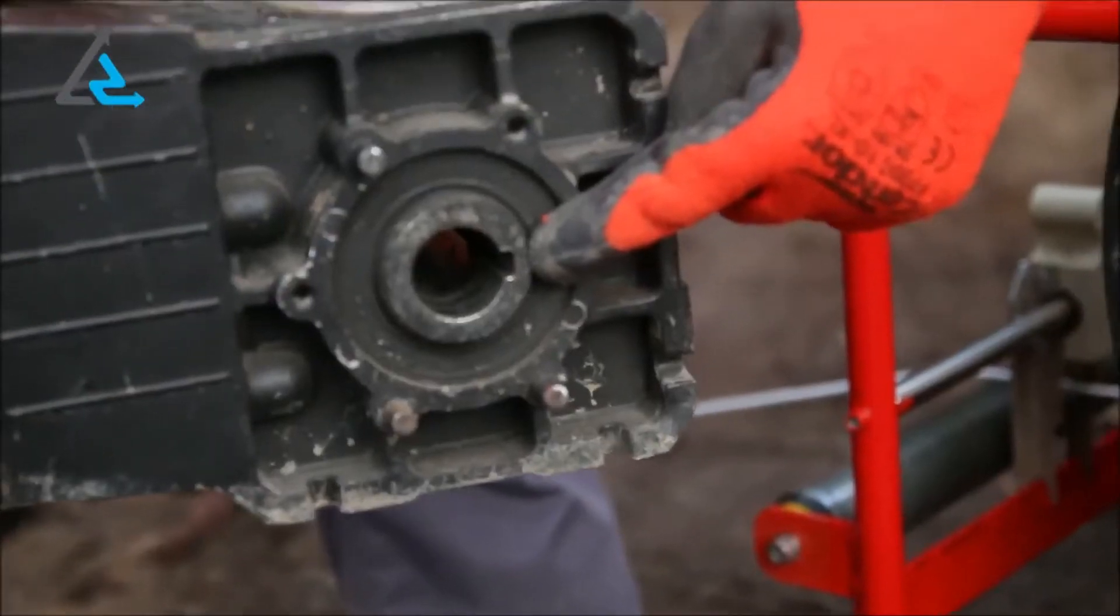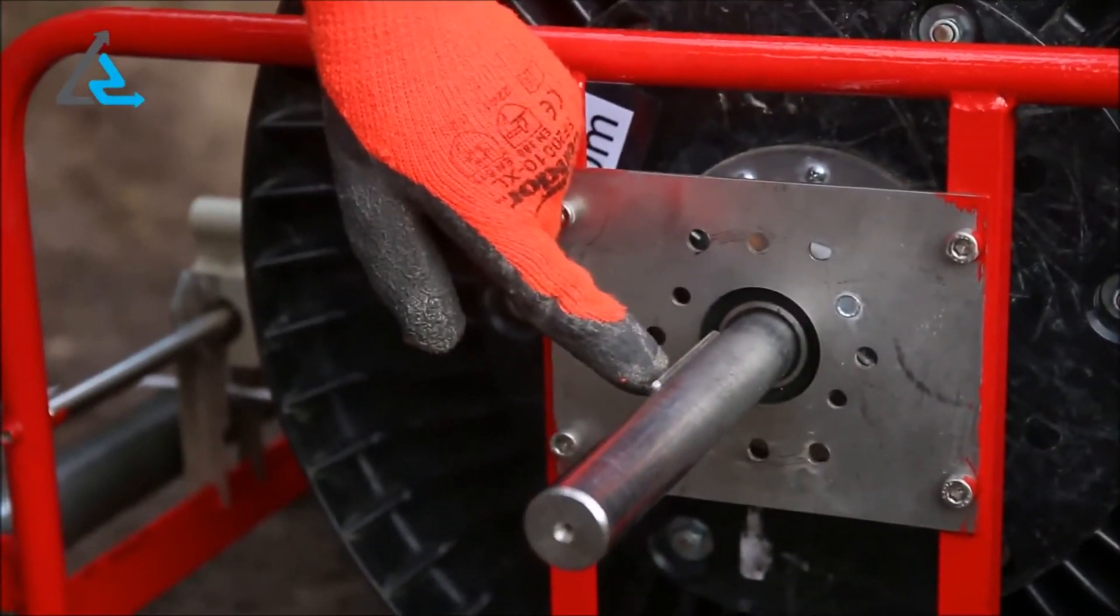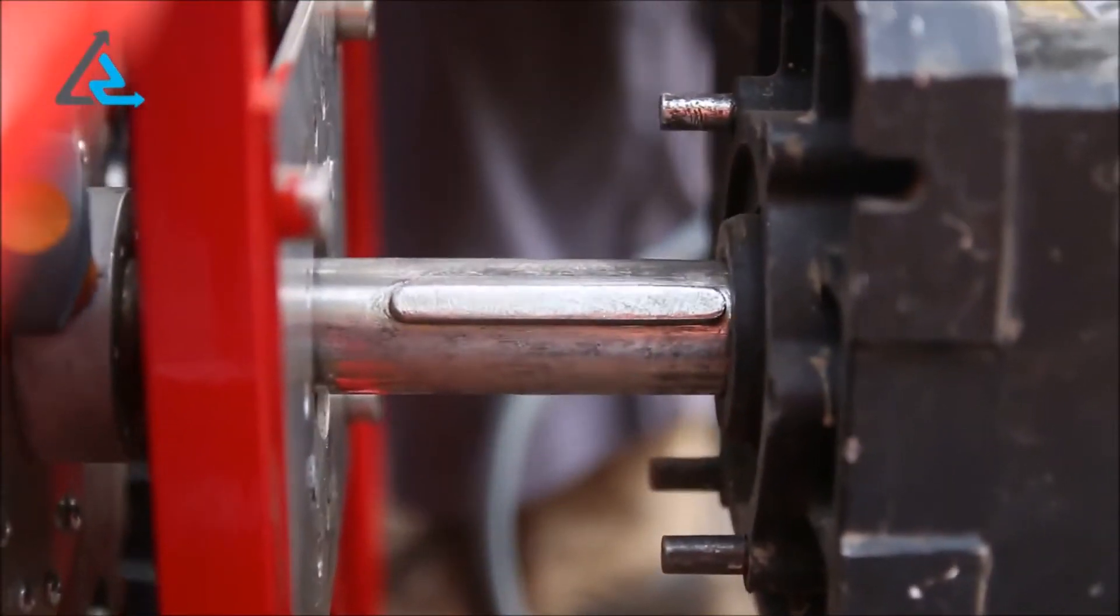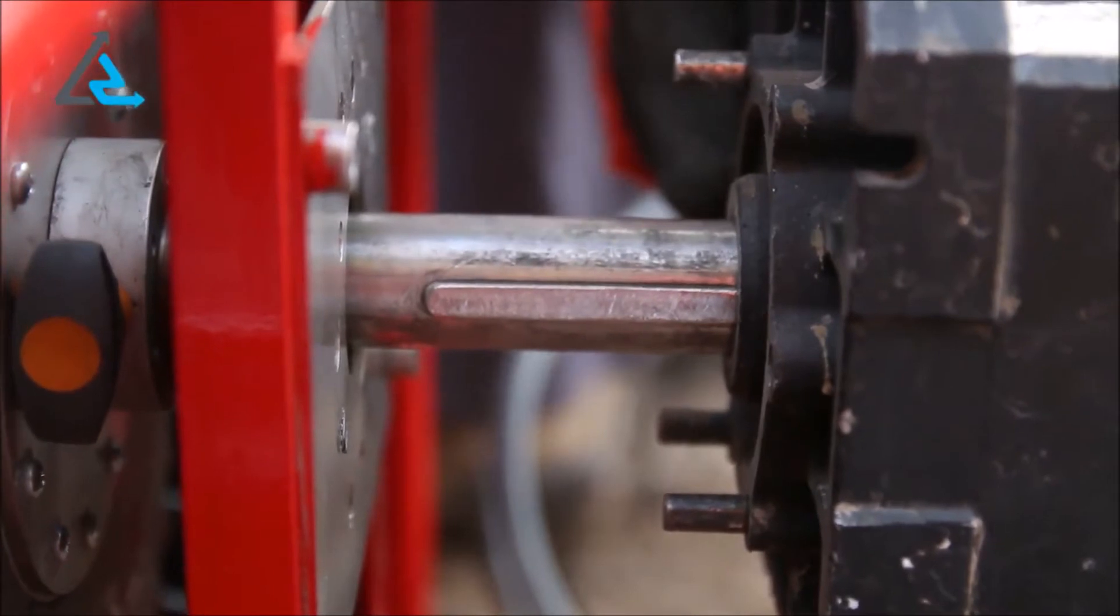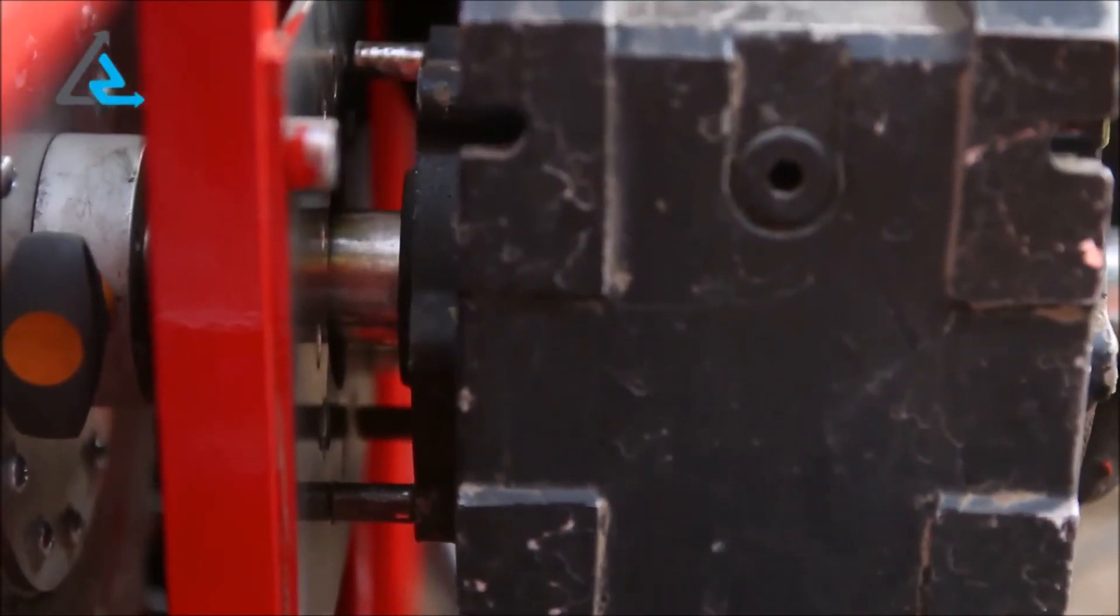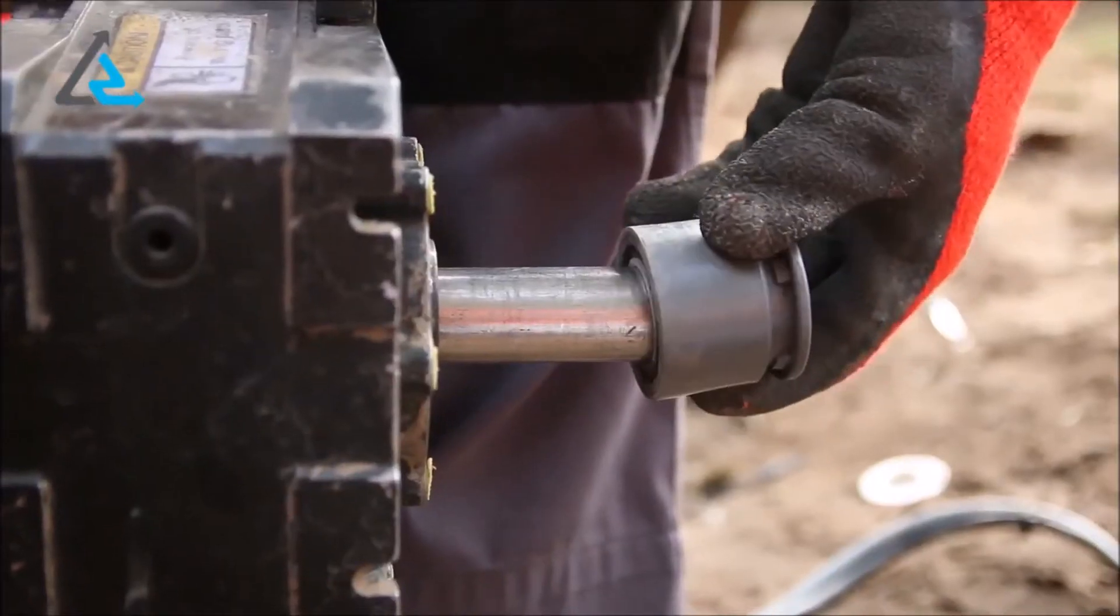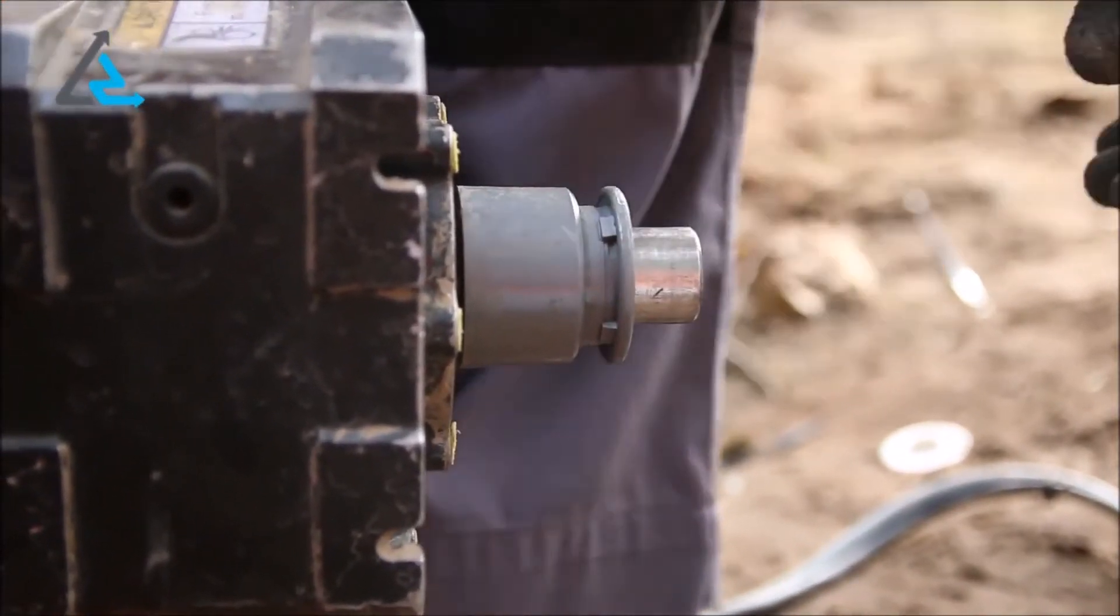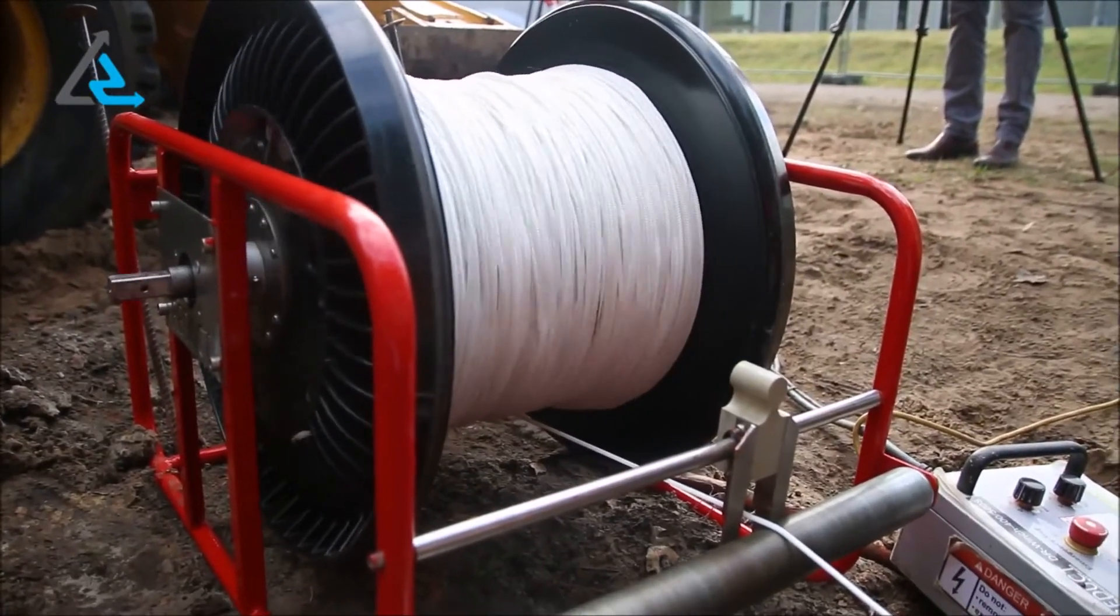To mount the motor, make sure the woodruff key on the axis is aligned with the slot in the motor. When the motor is fully mounted, place the lock nut securely. The winch is now ready for use.